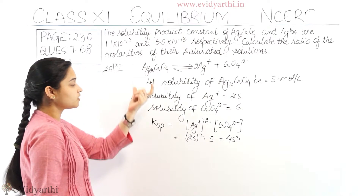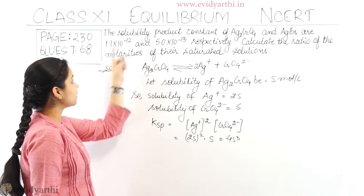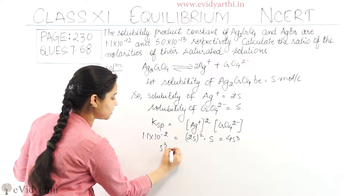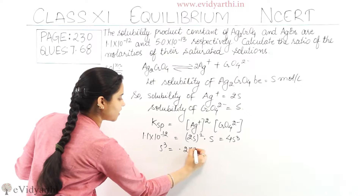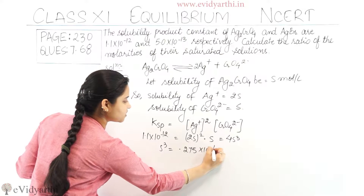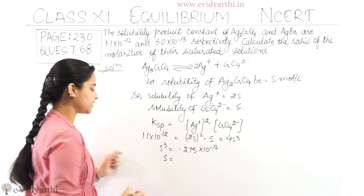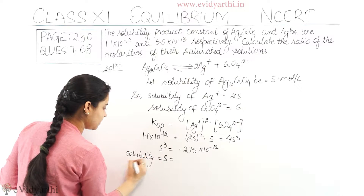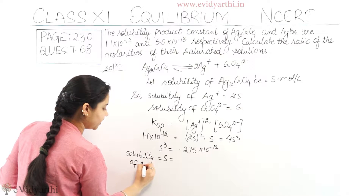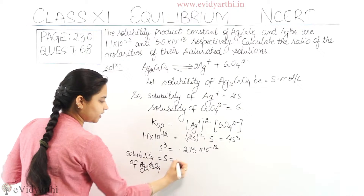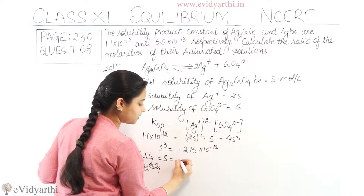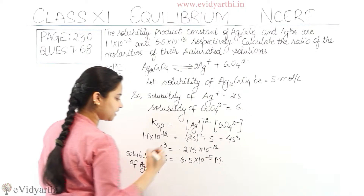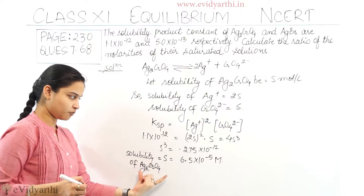The KSP value given for silver chromate is 1.1×10⁻¹². So S³ equals 0.275×10⁻¹², meaning S equals 6.5×10⁻⁵ molar. This is the solubility of silver chromate.